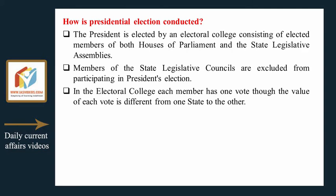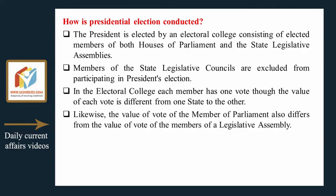In the electoral college, each member has one vote, though the value of each vote is different from one state to another. Likewise, the value of the vote of members of Parliament also differs from the value of the vote of members of a legislative assembly.